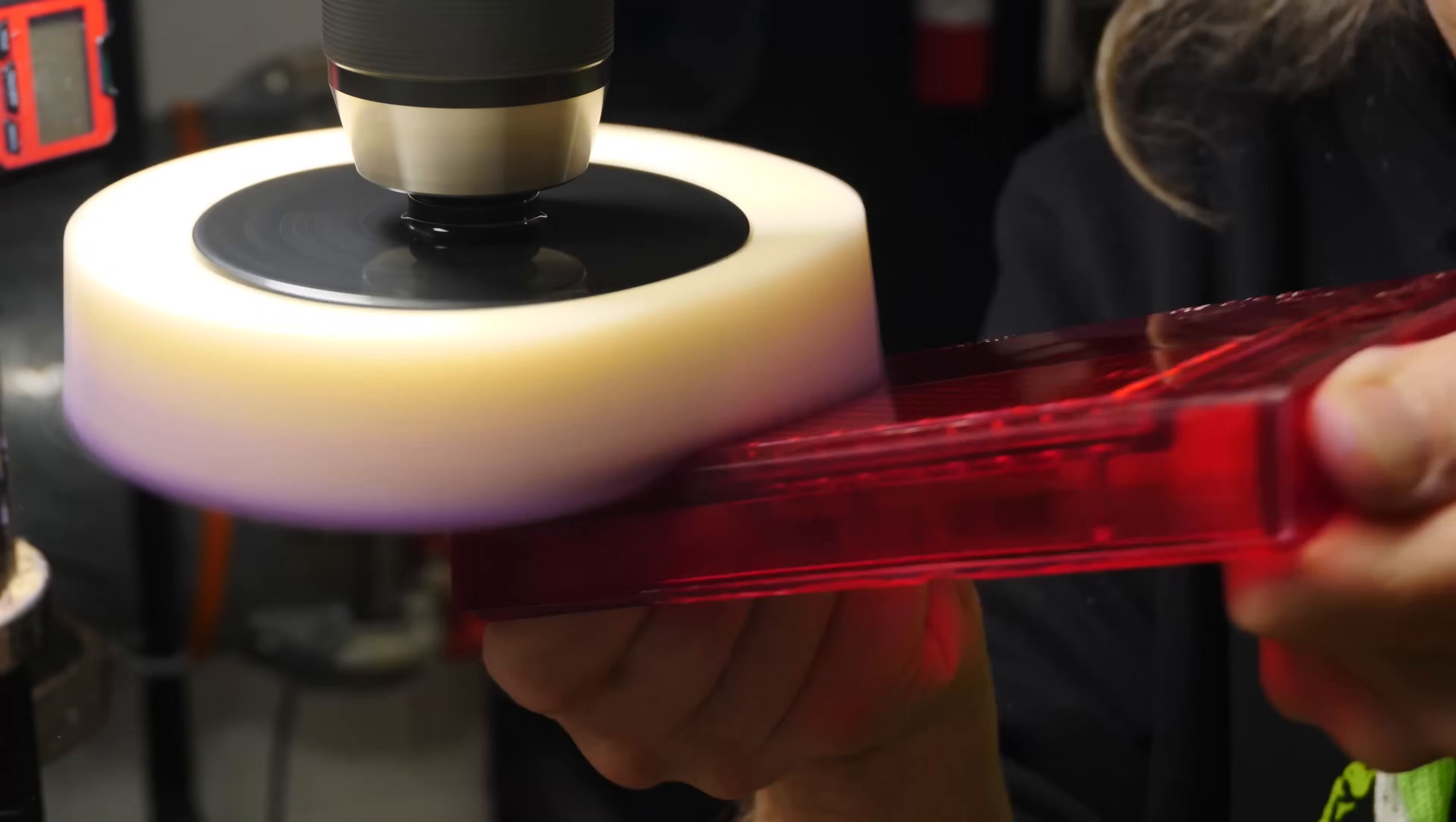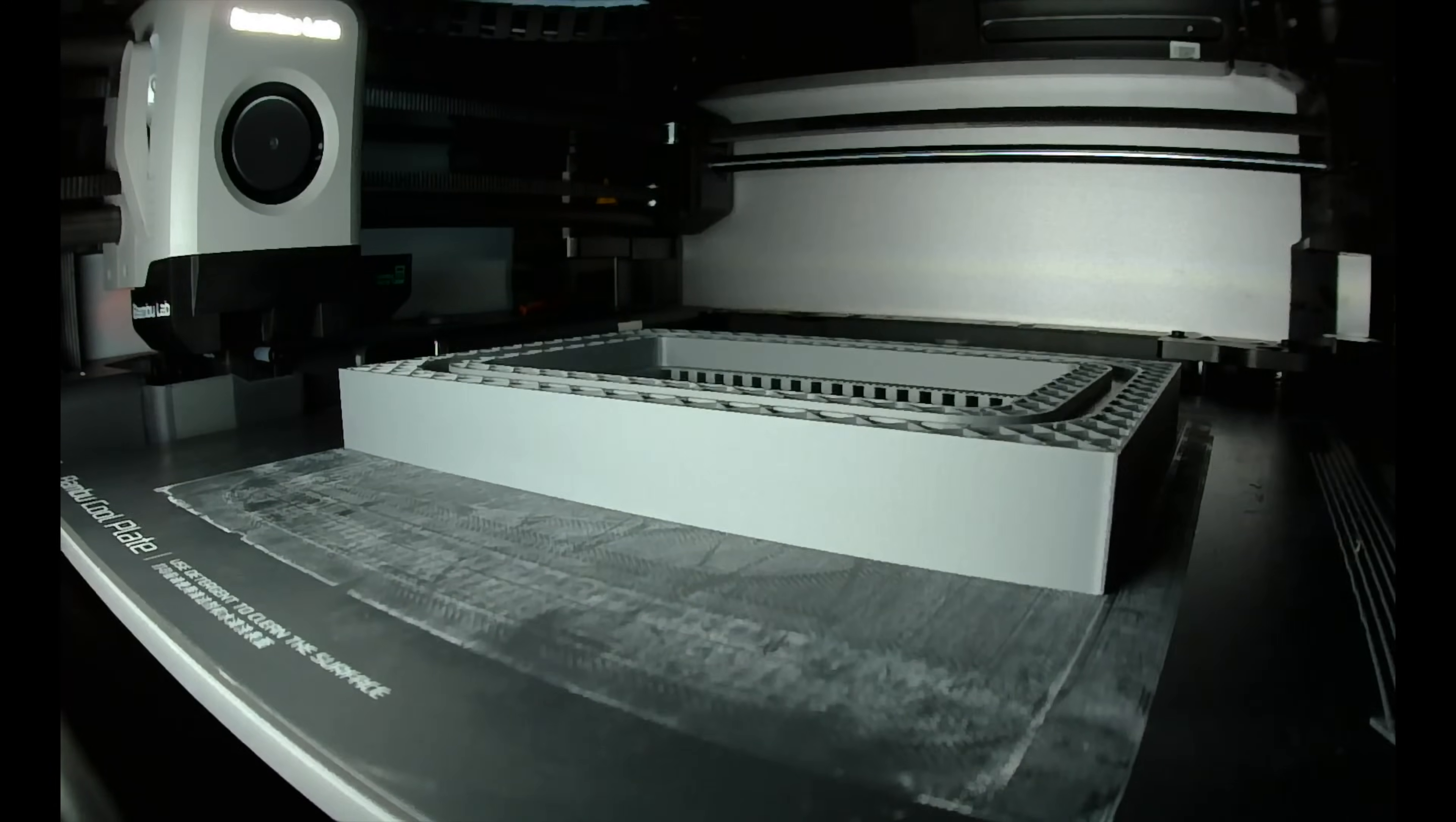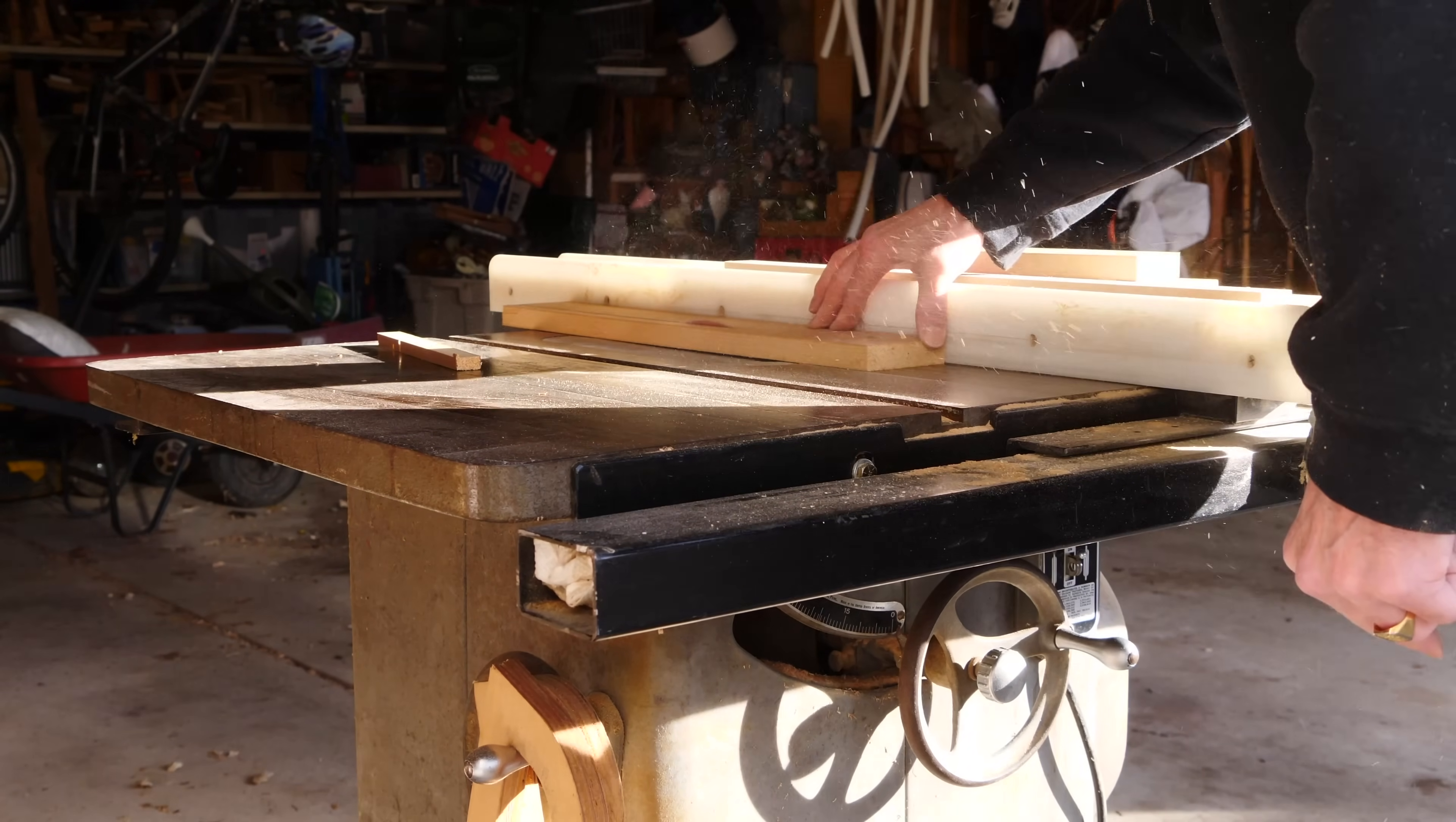Next, I'm going to 2D scan them on a flatbed scanner so that I can make a 3D printed splitter board. With the parts scanned, I'm able to make a 3D printed splitter board and print that here on my Bamboo X1 Carbon. Excellent printer. There'll be a link in the description below if you want to get yourself one.